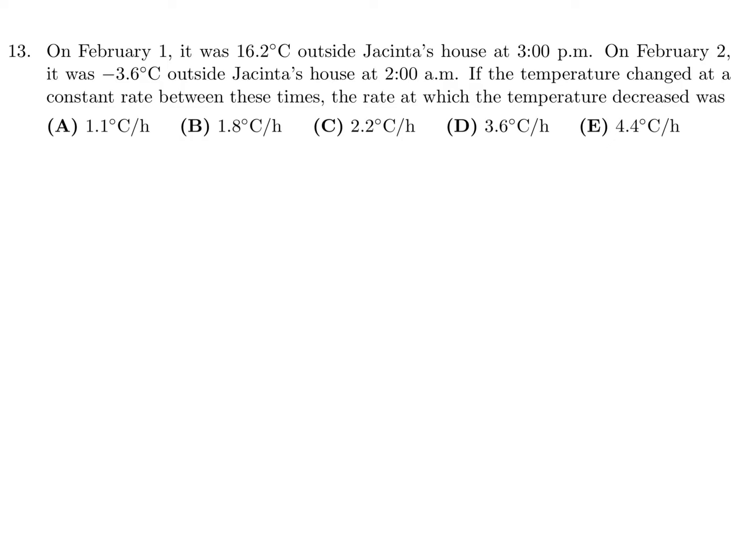On February 1st it was 16.2 degrees Celsius outside Jacinta's house at 3 p.m. On February 2nd it was minus 3.6 degrees Celsius at 2 a.m. If the temperature changed at a constant rate between these times, we're going from 16.2 to minus 3.6, meaning we go down 19.8 degrees Celsius.